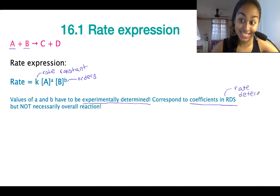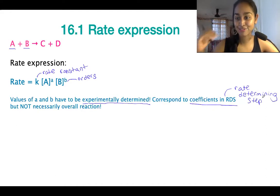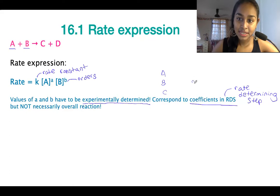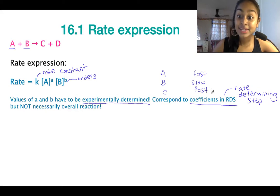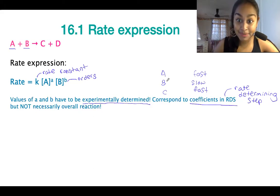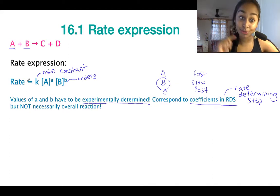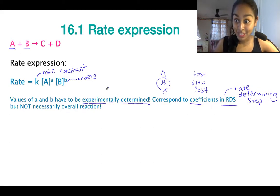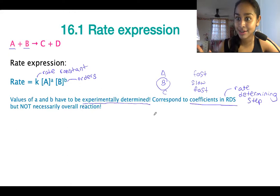The rate determining step is the slowest reaction in a series of reactions. So let's say you've got reactions A, B, and C — B is slow, while A and C are fast, but they're all part of the same overall reaction. So the rate determining step is going to be B in this case, and therefore, based on B, we would derive our rate expression. The rate expression always comes from the rate determining step. The lowercase orders correspond to the coefficients in the rate determining step, but not necessarily the overall reaction.